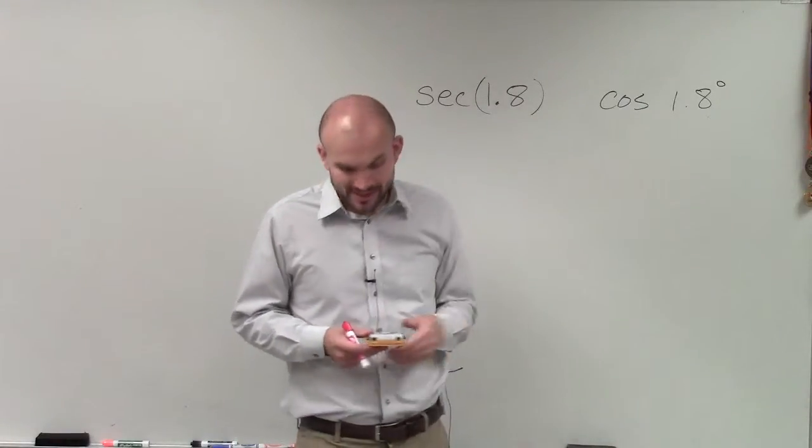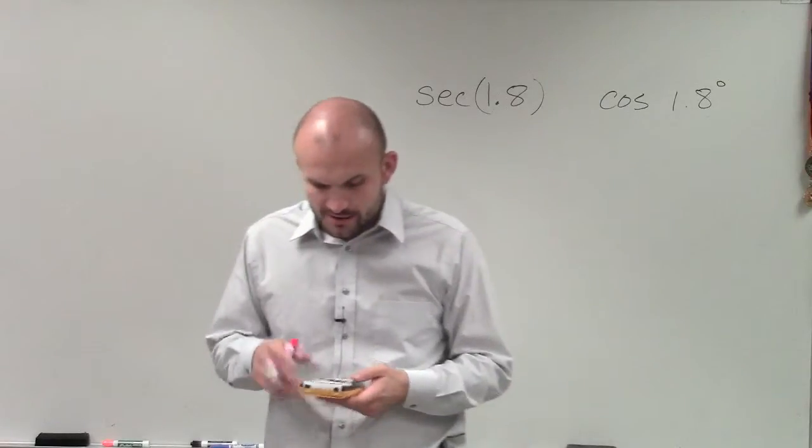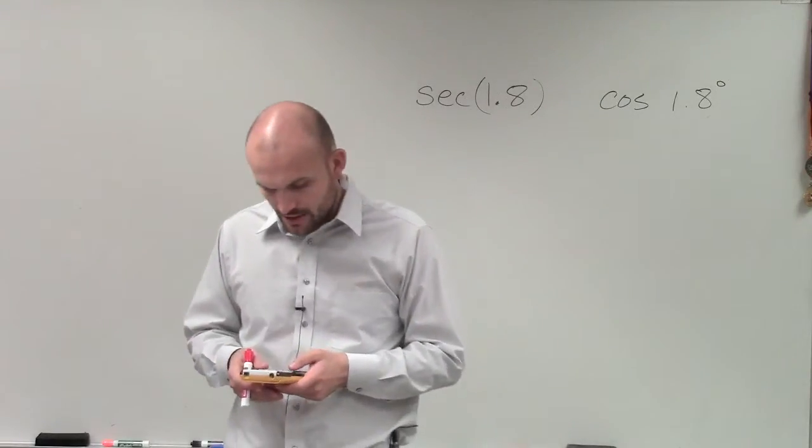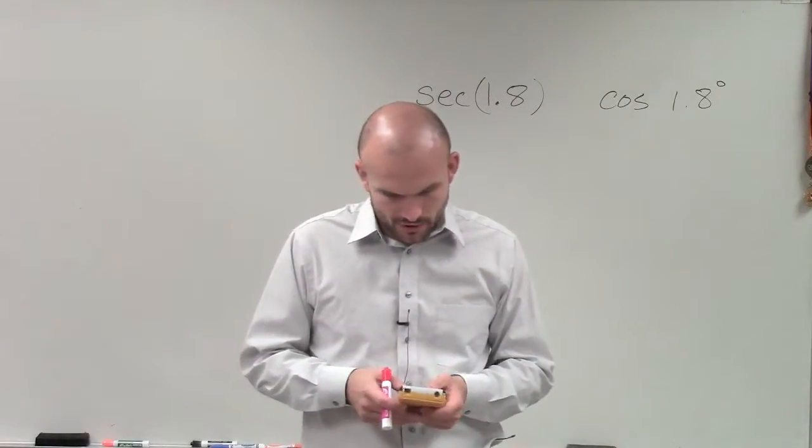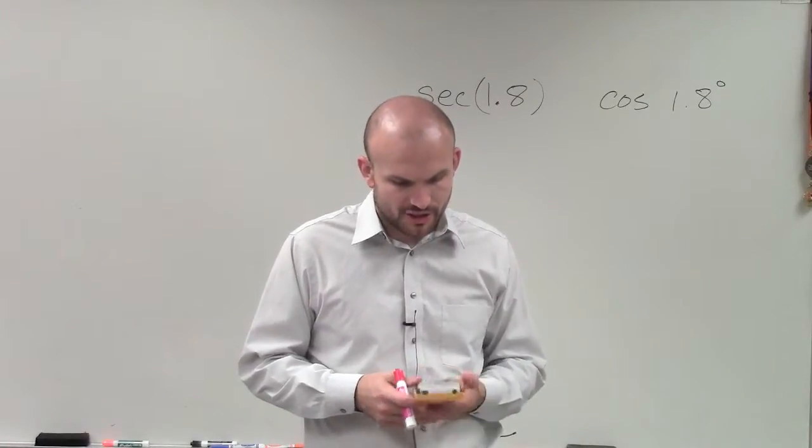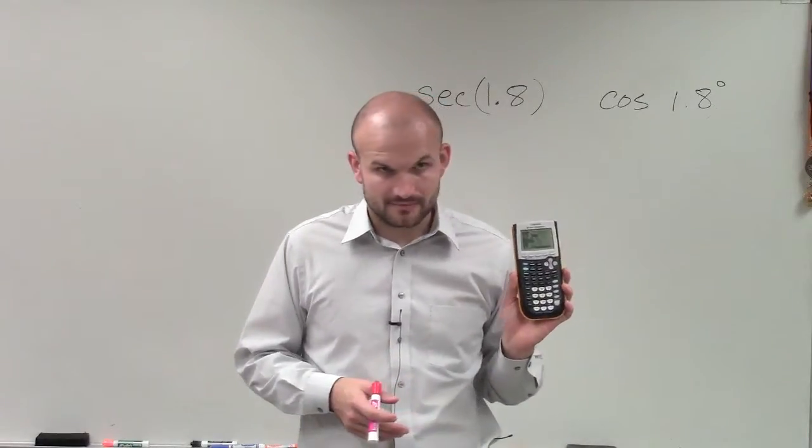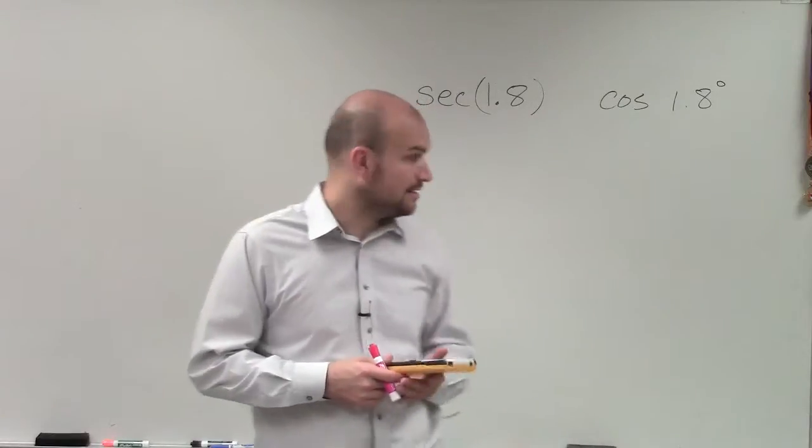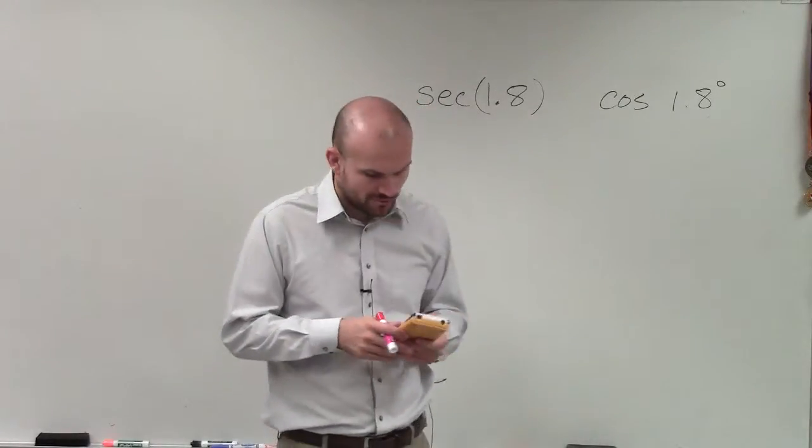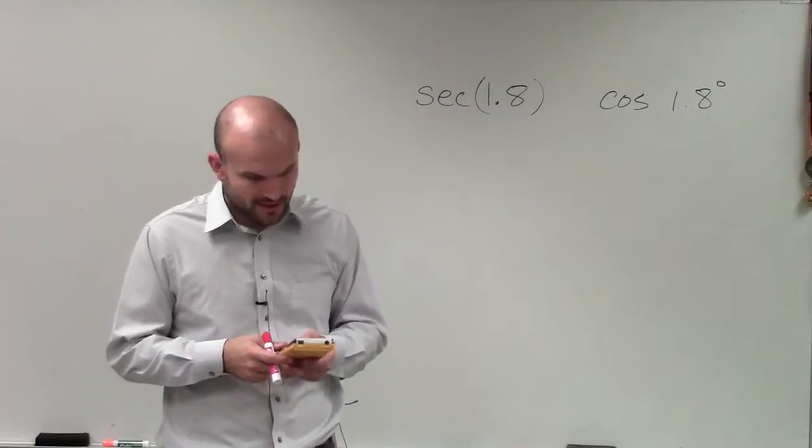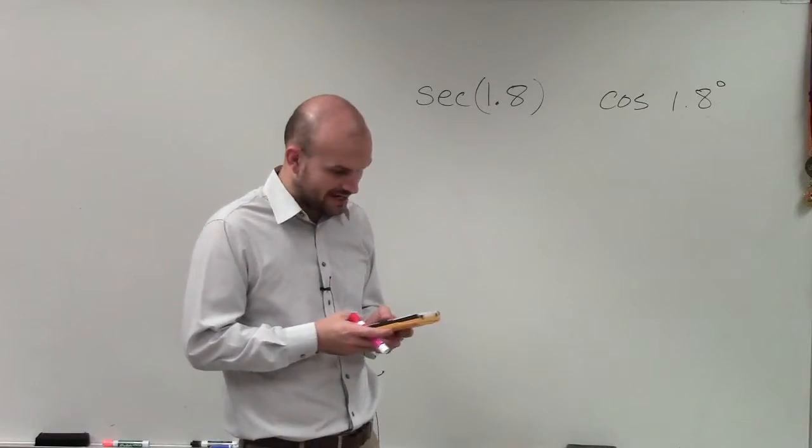So, let's go and do the cosine of 1.8 degrees first. So the first thing you need to do is make sure you go to your mode and you make sure degree is highlighted. So then, all you simply do is when you go to your mode, highlight degree, and then you do cosine of 1.8 degrees.